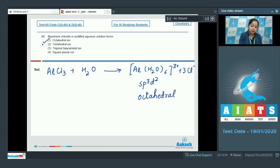So it is very clear the correct answer is option number 1, that is aluminum chloride in acidified aqueous solution forms octahedral ion.